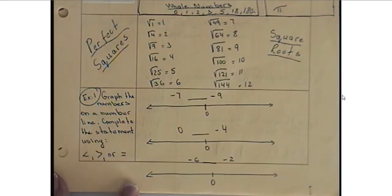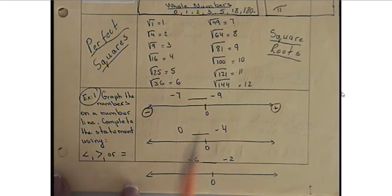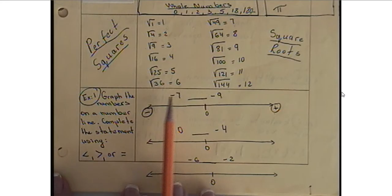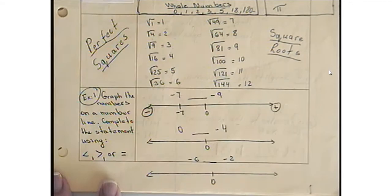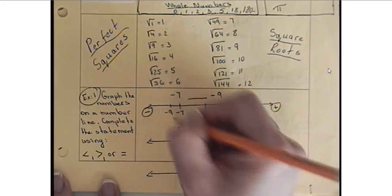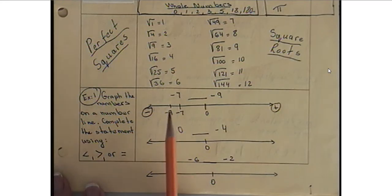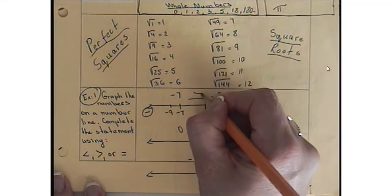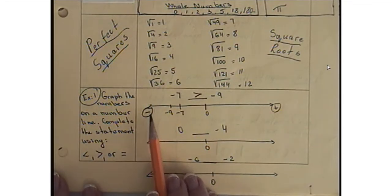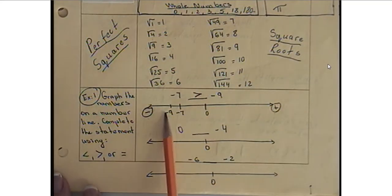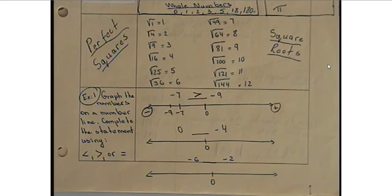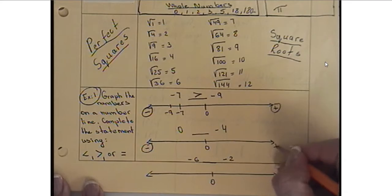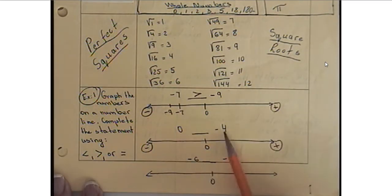Focusing on the first example, we have negative 7 and negative 9 on a number line. Zero is always in the middle — all positive numbers are on the right, all negatives are on the left. Negative 7 will be close to 0, and negative 9 will be a little bit farther away. That shows us negative 9 is less than negative 7, because the least numbers go to the left and the greatest go to the right.